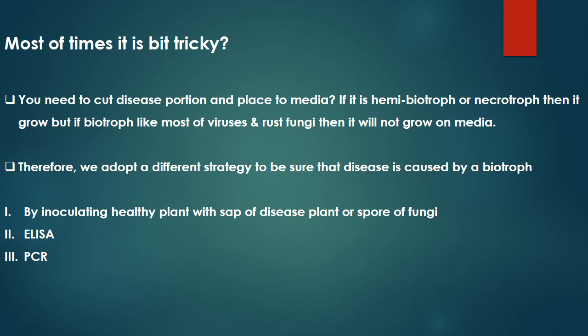If we can't grow biotrophic pathogens on media, how can we know that the disease is caused by a virus or some biotrophic fungus? We need to adopt a different strategy. In the case of viruses, we extract the sap from the infected plant and rub it on a healthy plant of the same species — if the disease develops, it confirms a viral infection. In the case of biotrophic fungi such as rust, we collect the spores and spray them on plants of the same species, and if the disease develops we can conclude that it is due to a biotrophic fungus.